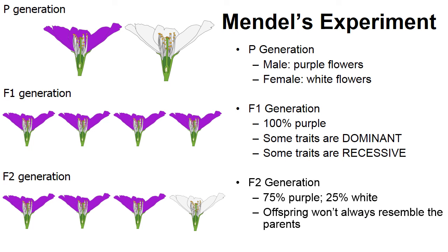Mendel uncovered that offspring don't always resemble their parents. Notice the parents of the F1 generation were all purple, and yet 25% of the F2 generation had white flowers. He also noticed that traits can skip generations — the presence of white flowers was skipped in the F1 generation because white is recessive.